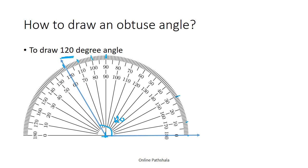This angle is 120 degrees. Let's label it as angle PQR. So we can say that angle PQR is a 120 degree angle.